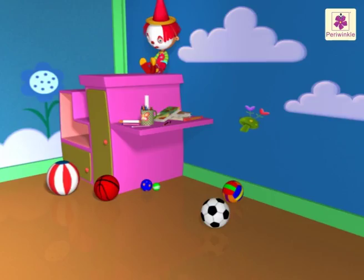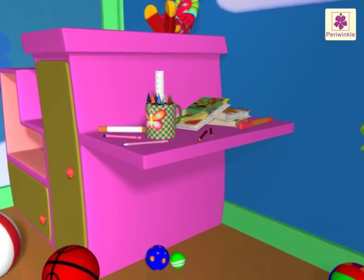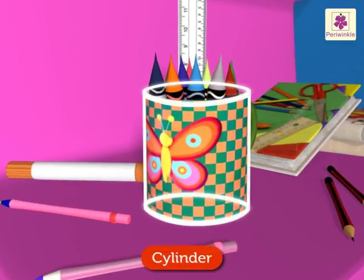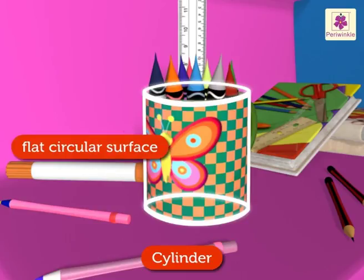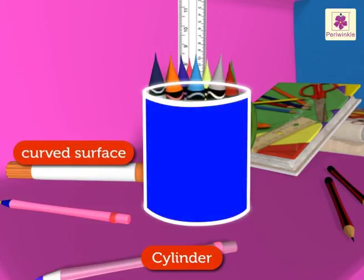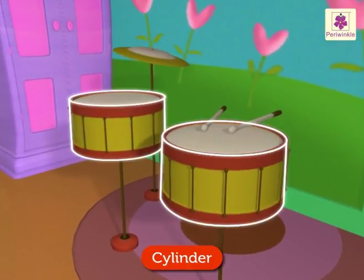Look! There is a mug full of crayons on the table. The mug is cylinder in shape. A cylinder has two flat circular surfaces and one curved surface. Come, let us play these drums — they are also cylinder-shaped.